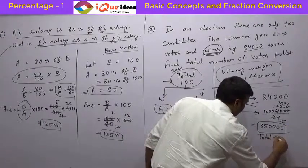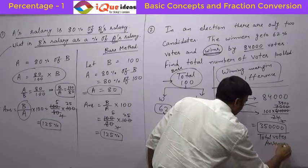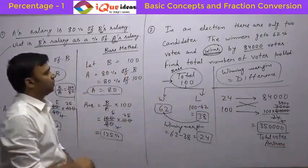So total number of votes polled is 350,000. This is the total number of votes. So this is the answer of the question, because the question is asking what is the total number of votes polled.